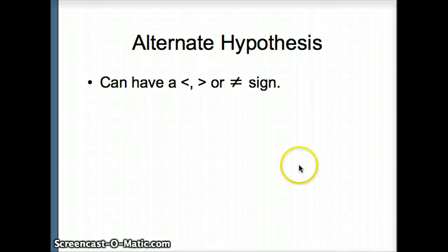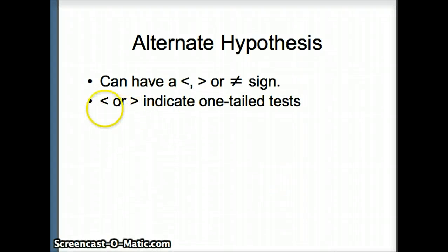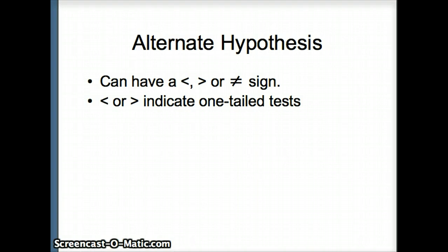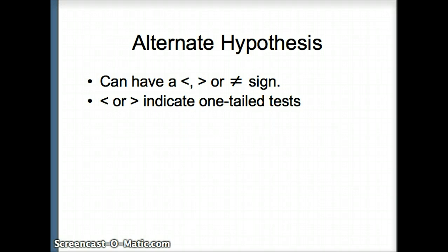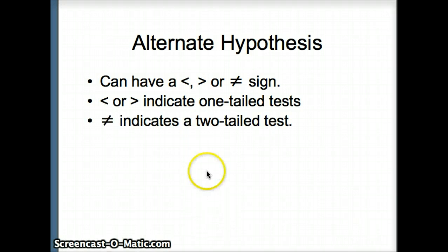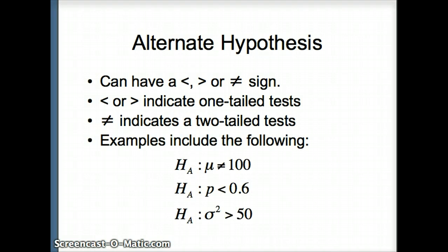The alternate hypothesis can have either a less than sign, a greater than sign, or a not equal sign. If we're using less than or greater than, it's a one-tail test. So if the alternative hypothesis is mu is less than 5, the only way you'll have evidence for that is if it's all in one tail — everything is to the left. A similar argument applies for the right. If we have not equals, a number not equaling 10 could either be a lot smaller than 10 or a lot greater than 10 — that's what we mean by a two-tailed test.